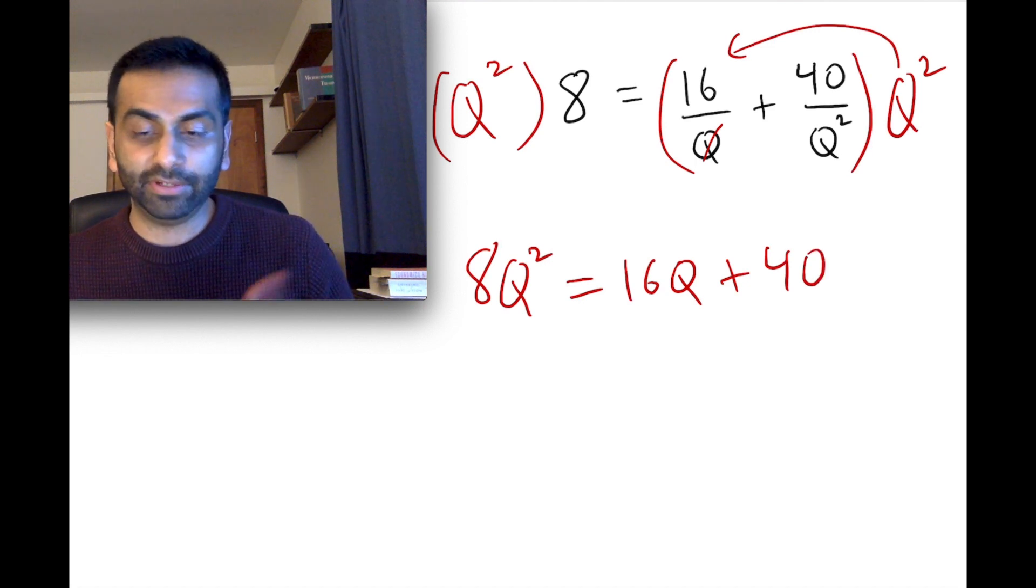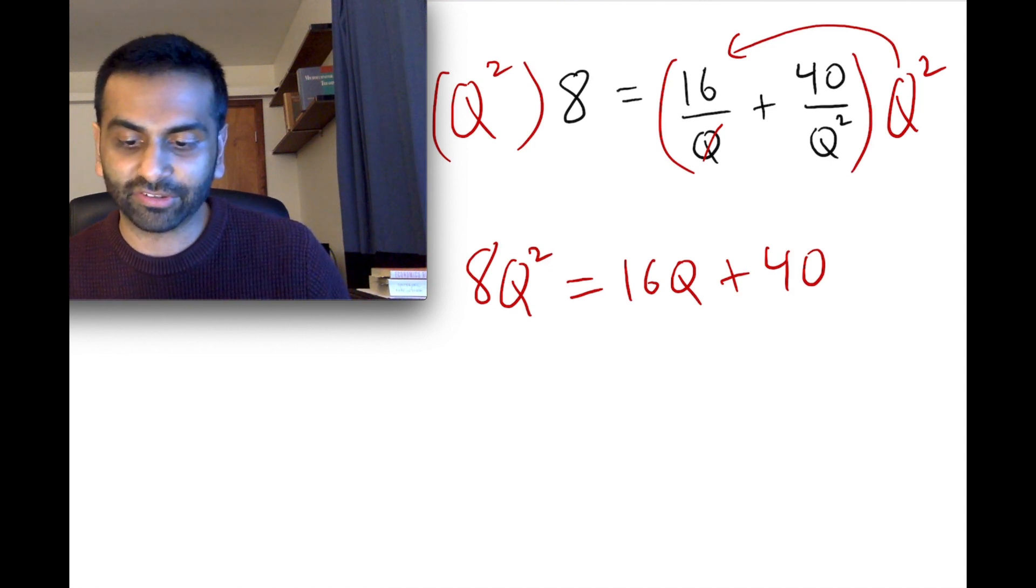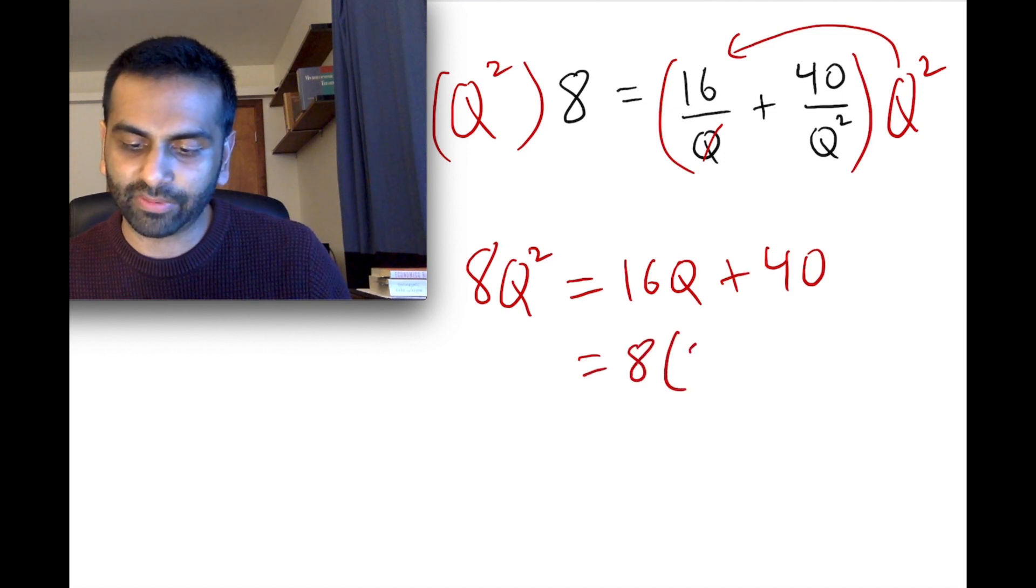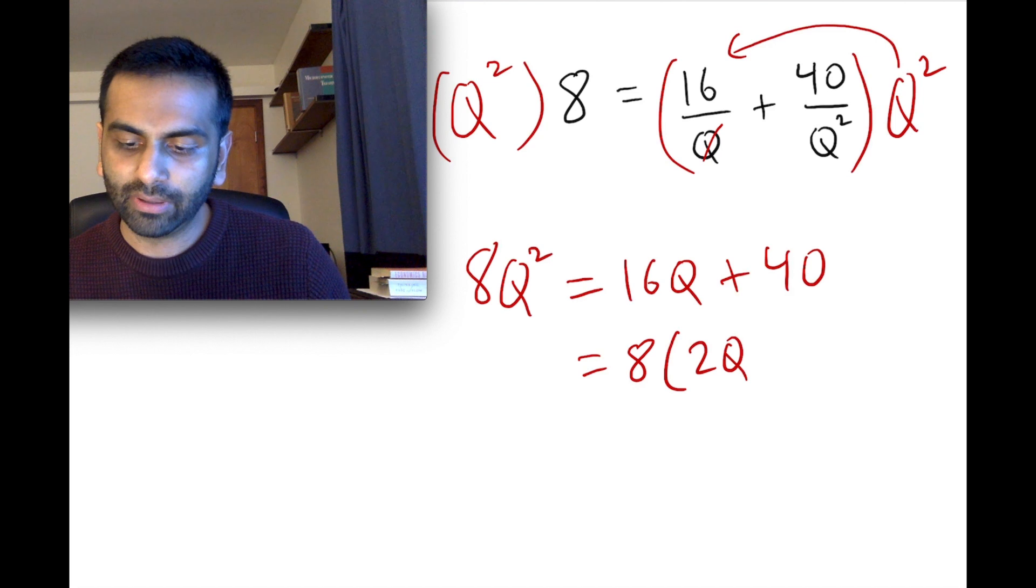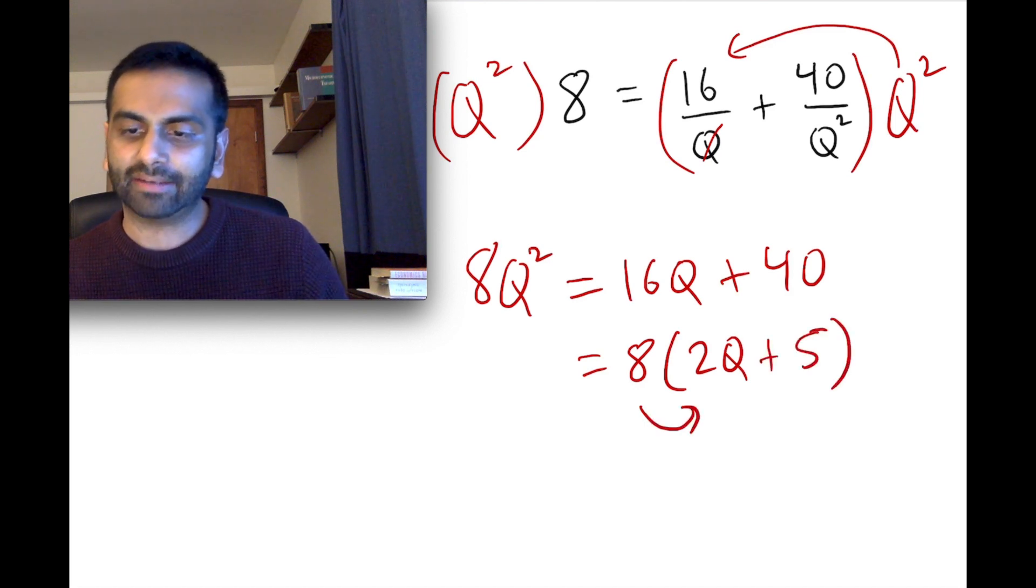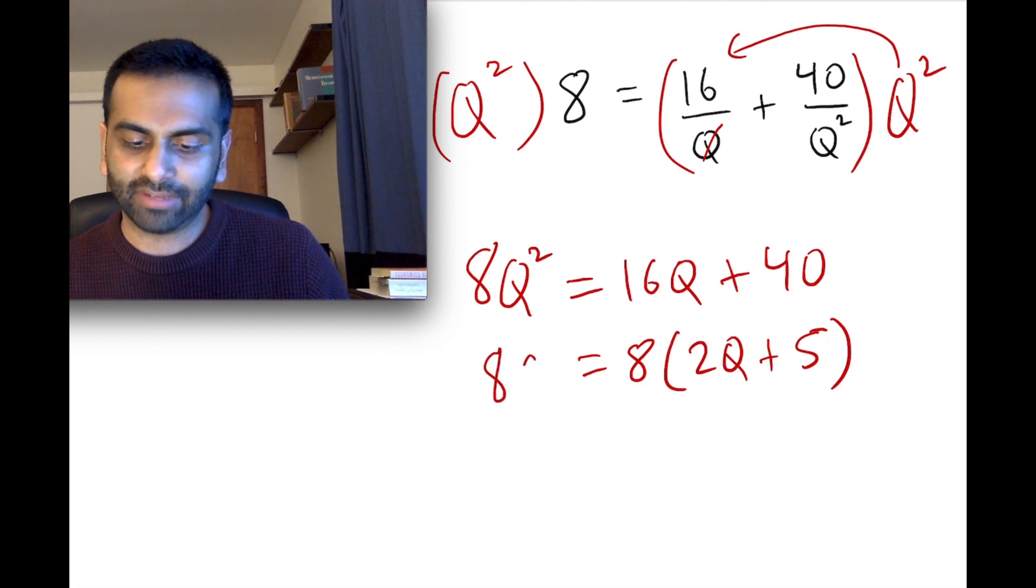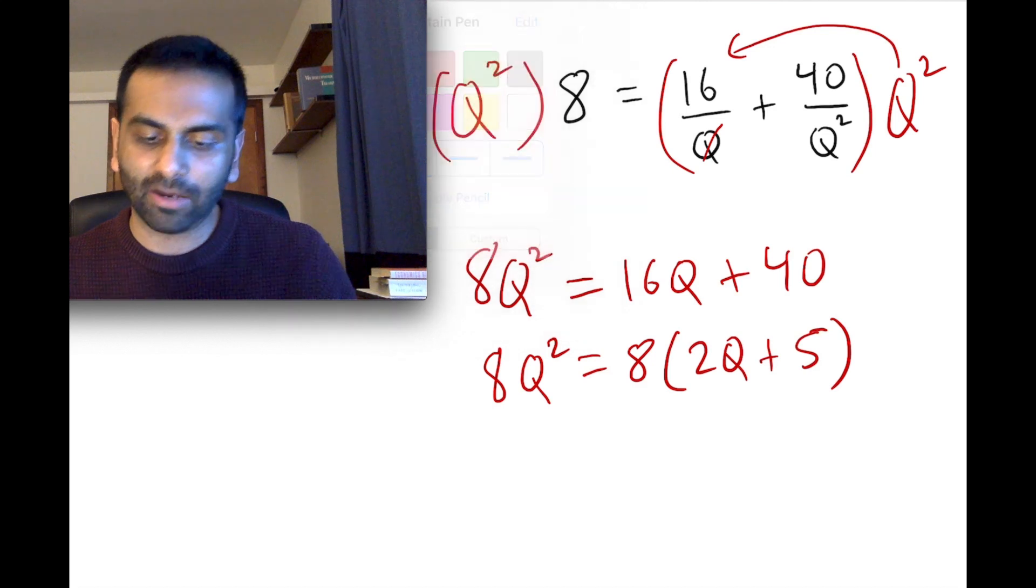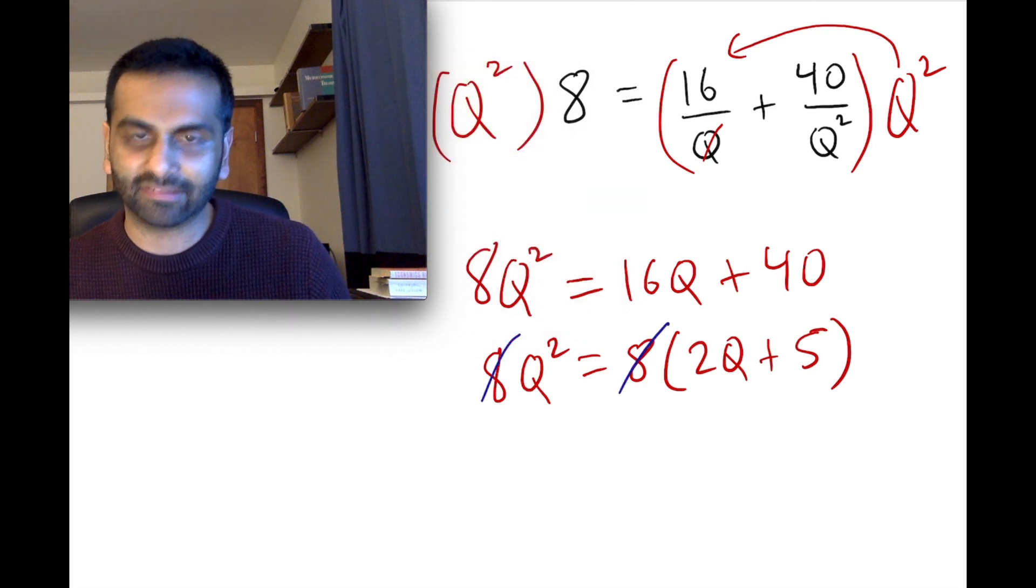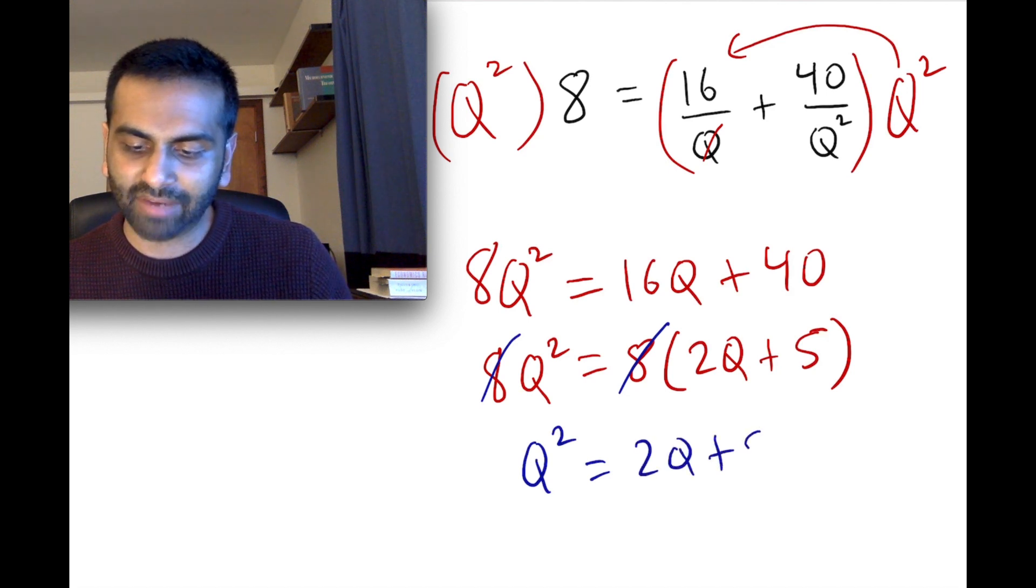And yeah, so now you can even, if you want, at this point, divide both sides of the equation. You might notice that 8, the number 8 factors. So you can just divide. If you factor out an 8 here on the right-hand side, you're left with 2q plus 5. Because you can verify 8 times 2, that's 16q. 8 times 5, that's 40. So on the left, you have 8q squared. So if you divide now by 8 to both sides, you can just cancel the 8s. And you have q squared equals 2q plus 5.